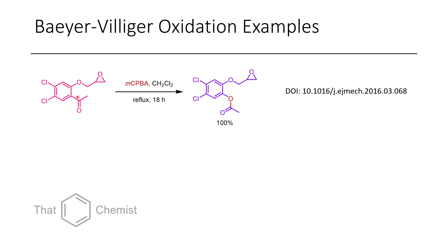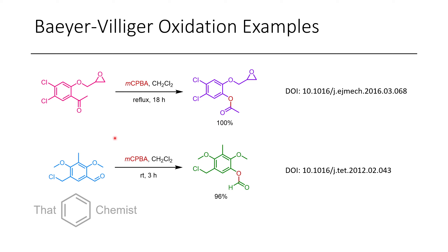In the first example, recalling migratory aptitude, a methyl group is least likely to shift. Because the benzene ring has a higher likelihood to shift, we get the oxygen forming a bond to the benzene ring rather than to the methyl. In the other case — benzaldehyde — the benzene ring shifts, giving formation of a formate ester. So instead of forming an OH, we form an O-benzene product.